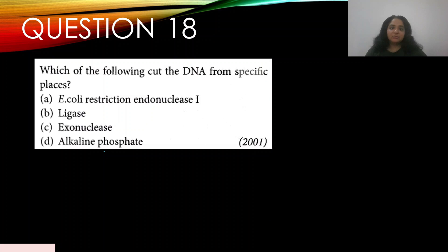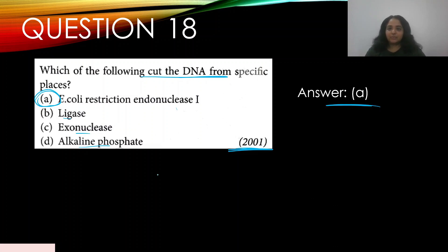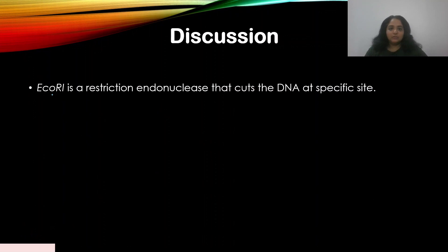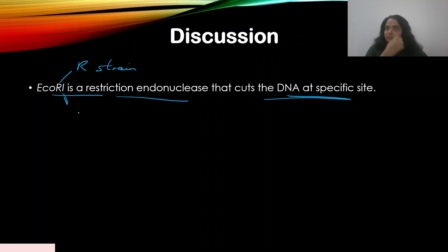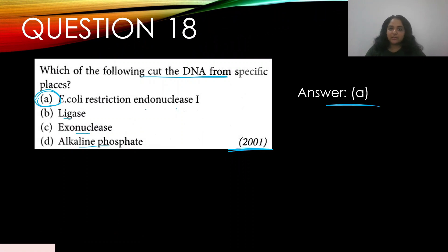Question 18: Which of the following cuts DNA from specific places? This appeared in 2001. Options: A — EcoRI (E. coli restriction endonuclease I), B — ligase, C — exonuclease, D — alkaline phosphatase. The answer is A — EcoRI. It is a restriction endonuclease that cuts DNA at specific sites. In the name EcoRI, 'R' refers to the strain and '1' refers to the order in which it was discovered; 'Eco' refers to E. coli.